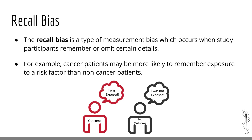Now let's talk about the recall bias. The recall bias is a type of measurement bias which occurs when study participants remember or omit certain details. For example, cancer patients may be more likely to remember exposure to a risk factor than non-cancer patients. Case control studies have a very high risk of this bias, because researchers ask patients with an outcome like cancer whether they remember being exposed to a potential risk factor. Patients with a disease often search for explanations for their negative outcome and therefore over-report exposure. The key word for this kind of bias is memory.